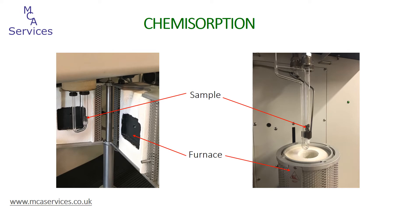The furnace is very important, because chemisorption analyses usually involve an initial cleaning step to remove any extraneous species bound to the sample, which would otherwise reduce chemisorption volume and produce artificially low results. This is usually undertaken by heating the sample in a reducing atmosphere, such as flowing nitrogen, wherever the sample type permits.